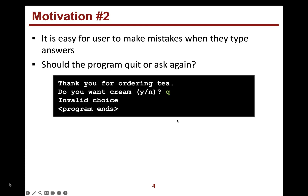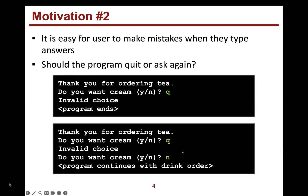Now we want to actually keep on looping until they give us something that we want. Here are two different solutions: we could say — pretending we're doing a tea order — 'do you want cream in your tea? Y or N?' and they give us Q. We don't know what Q means, so we could just say 'invalid choice' and end the program. Or we could tell them it's an invalid choice, ask them to enter it again, and then continue with the rest of the order.